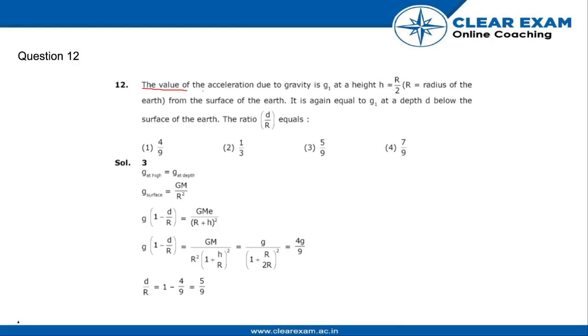The value of acceleration due to gravity is g1 at a height h equals r by 2, where r is the radius of the earth from the surface of the earth. It is again equal to g1 at a depth d below the surface of earth. The ratio d by r equals...